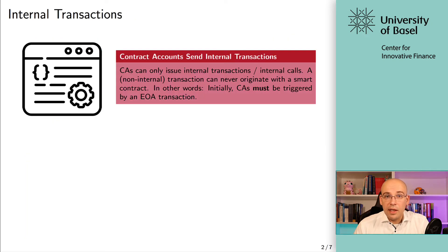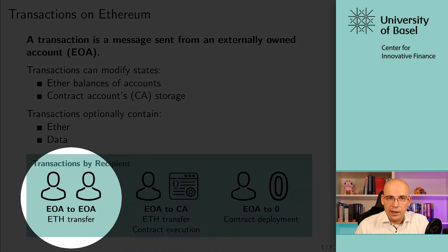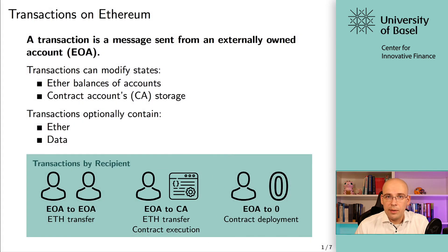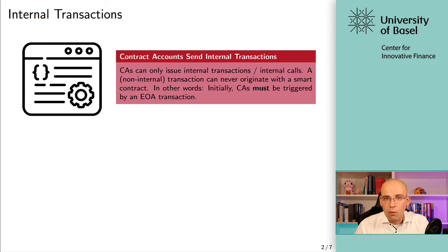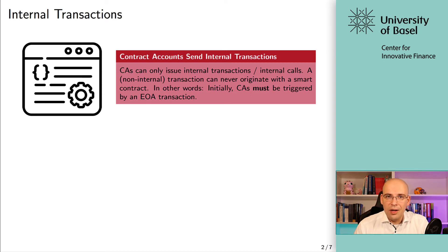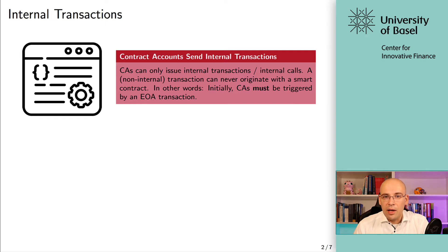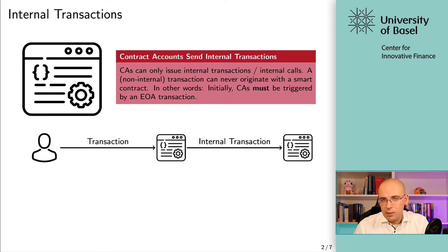Contract accounts send internal transactions. Actual transactions can only be initiated by EOAs — externally owned accounts. Contract accounts cannot initiate any action by themselves, but what they can do is forward transactions. When triggered by a transaction sent to a specific contract account, they can initiate a so-called internal transaction, which is like a transaction but contained within the initiating transaction. CAs can only issue internal transactions or internal calls. A non-internal, initiating transaction can never originate with a smart contract — contract accounts must always be triggered by an EOA transaction.